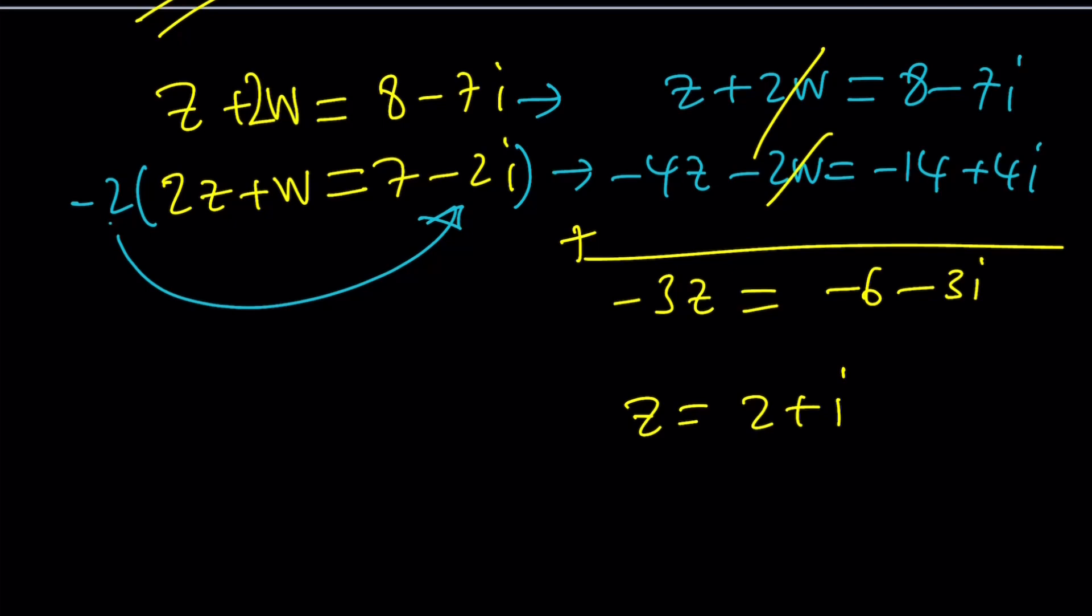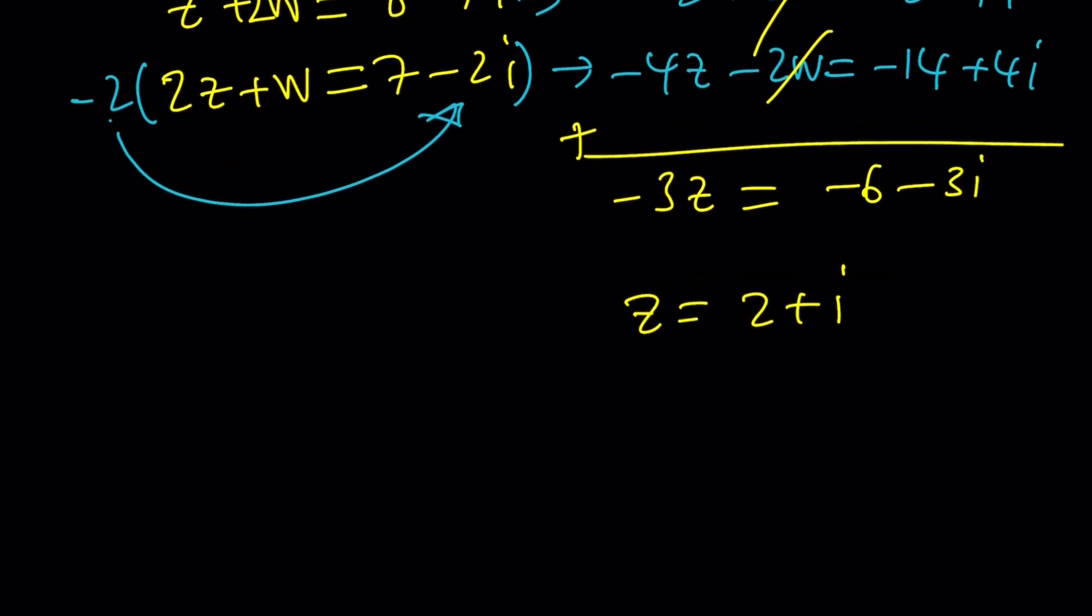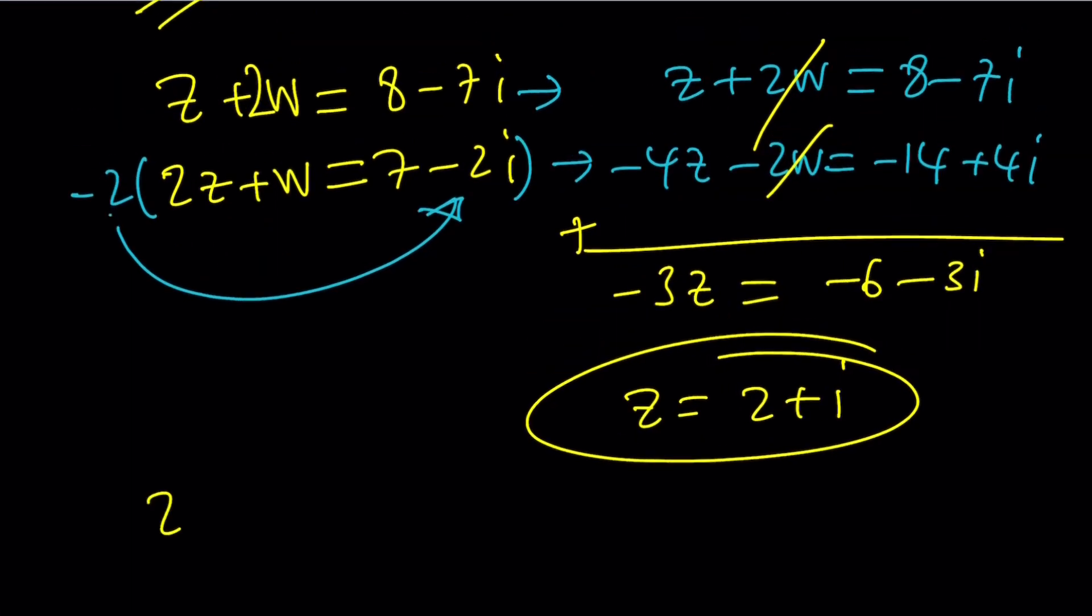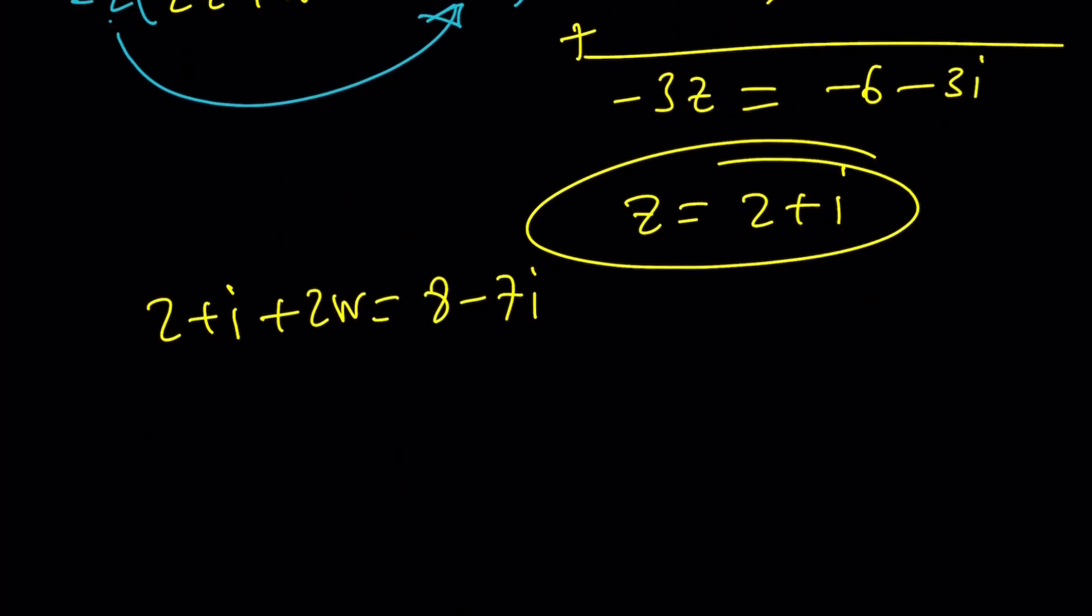And then, of course, if you want to find w from here, you can just plug it in to one of the equations. It doesn't matter which one. Let's use the top one. z is 2 plus i, plus 2w is 8 minus 7i. And, then, I'm going to subtract 2 plus i, 2w equals 6 minus 8i. And, then, divide by 2, and you're going to get w as 3 minus 4i. There's some type of relationship between these two numbers, by the way. But, we don't have to talk about that right now. That's a different story. So, this brings us to the end of the second method.